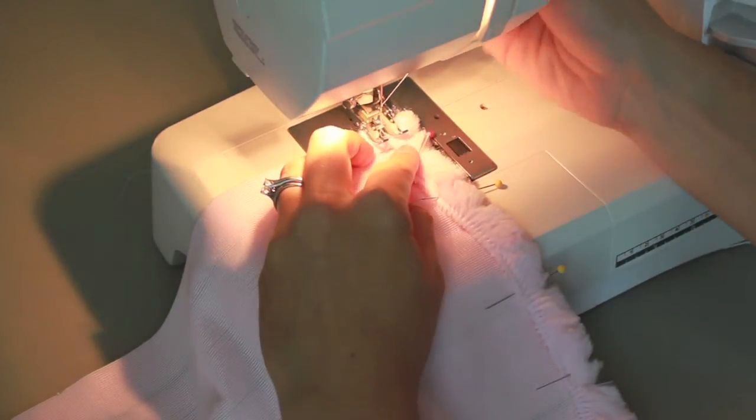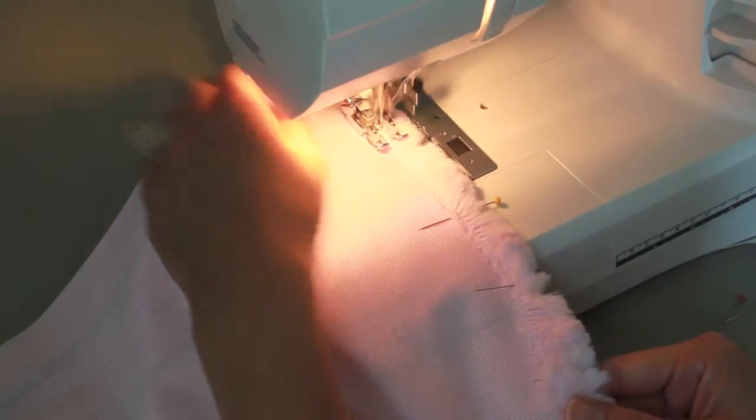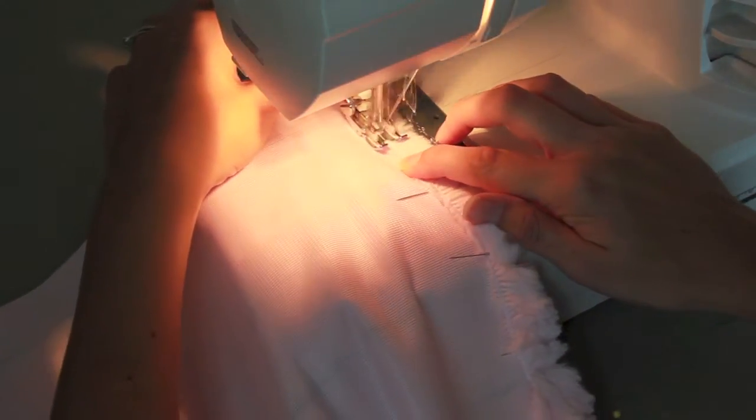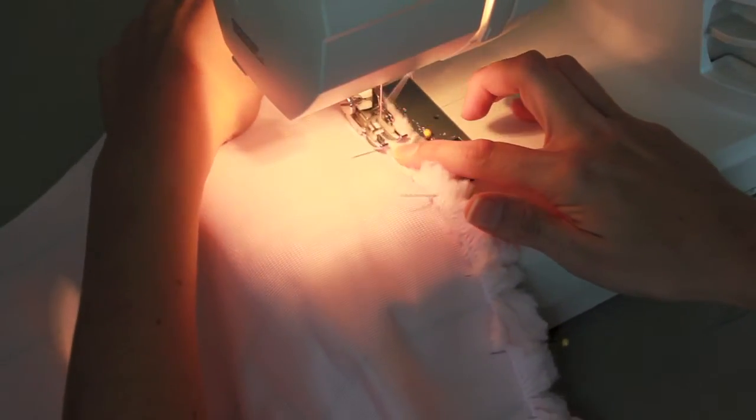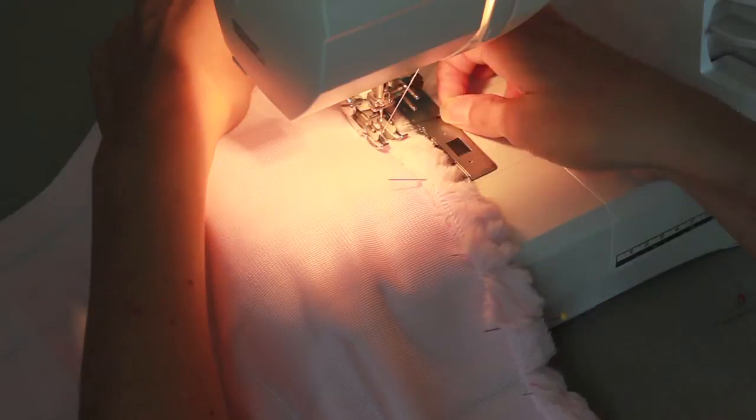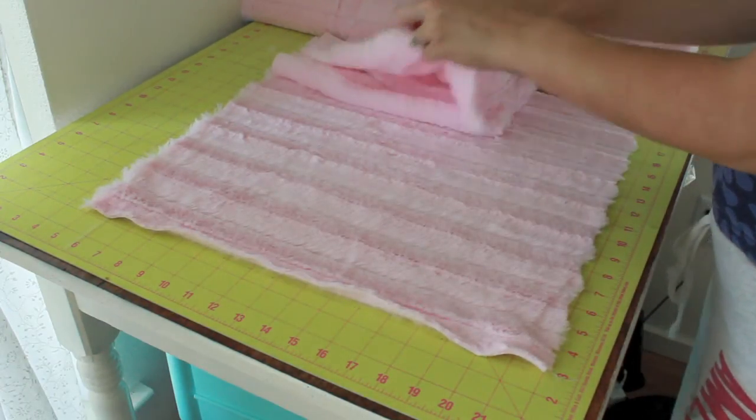The minky cuddle fabric can shift a little bit on the machine. Then you want to go over to your sewing machine and stitch right behind that zigzag stitch or that serged edge with a straight stitch and a walking foot if you have one. I didn't even change my needle out. A regular needle did fine but you can use a ball point or a stretch if you'd like.